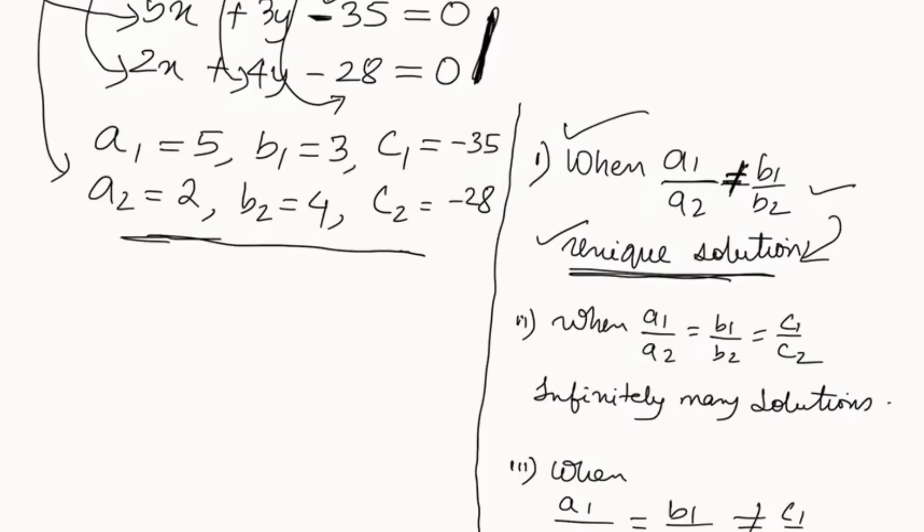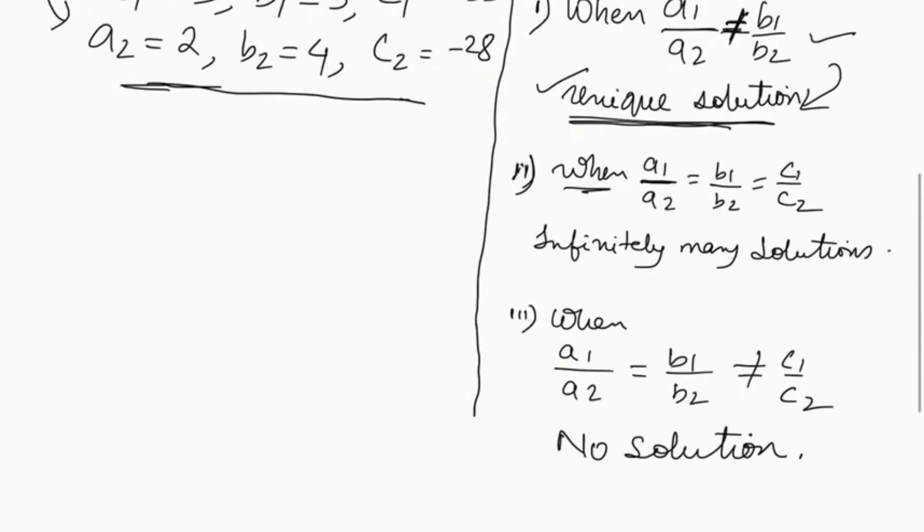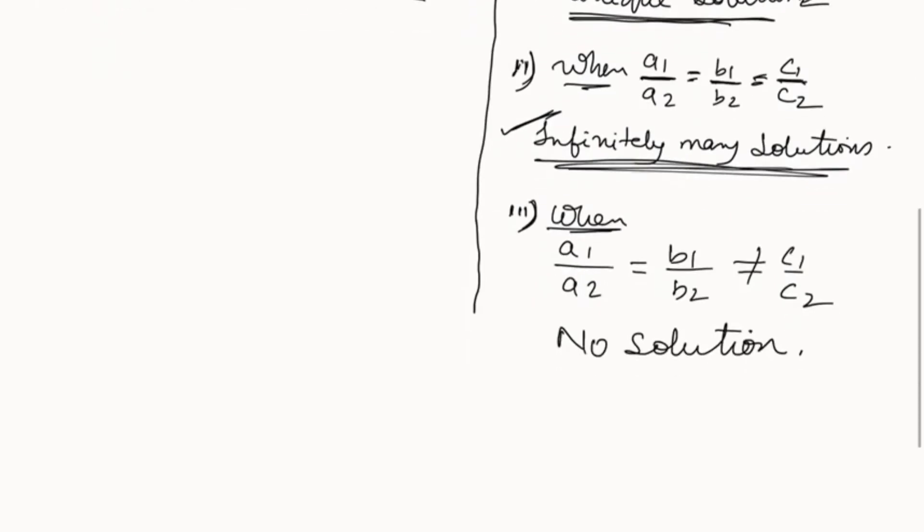The second condition is this: when a1 by a2 equals b1 by b2 equals c1 by c2, then the equations will have infinitely many solutions.